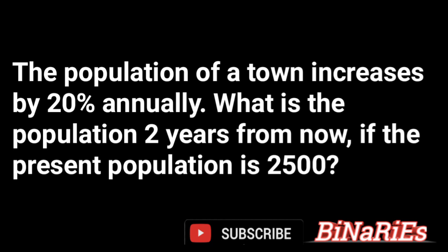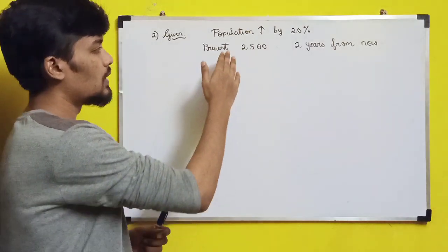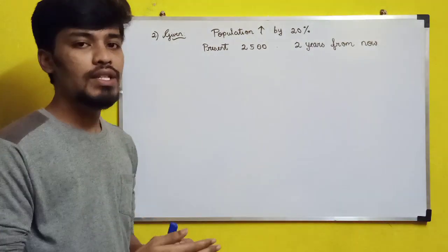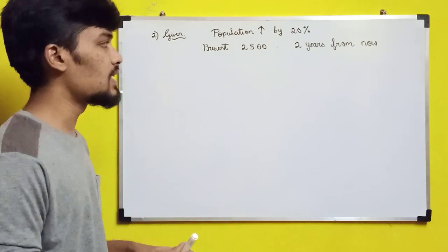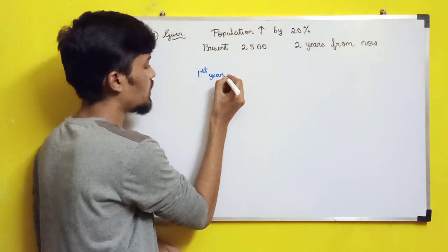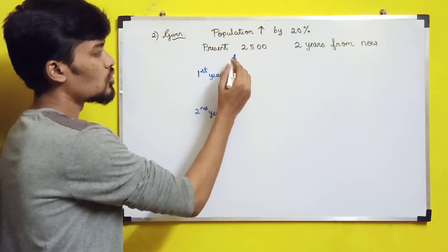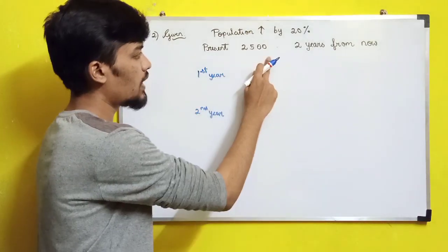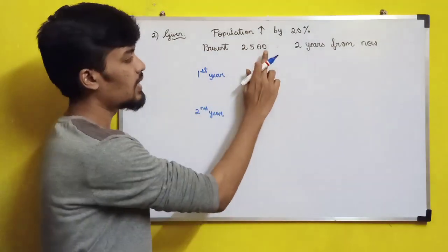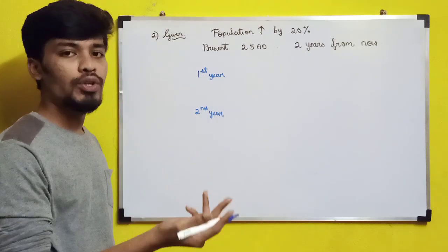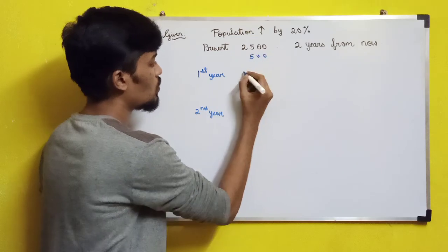Second question: the population of a town increases by 20 percent annually. What is the population two years from now if the present population is 2500? Current population is 2500. For the first year, 20% of 2500 is 500. So after the first year, the population becomes 3000.